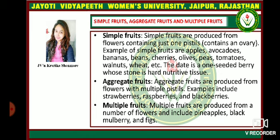The date is a one-seeded berry with a stone of hard nutritive tissue. Aggregate Fruits are produced from flowers with multiple pistils; examples include Strawberries, Raspberries, and Blackberries. Multiple Fruits are produced from a number of flowers and include Pineapples, Black Mulberry, and Figs.